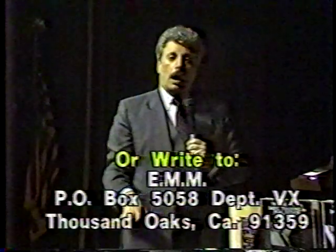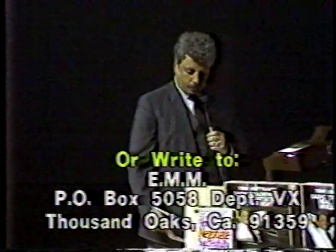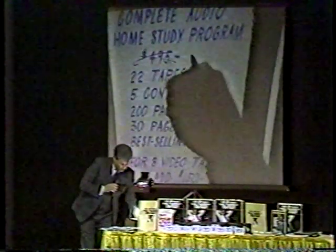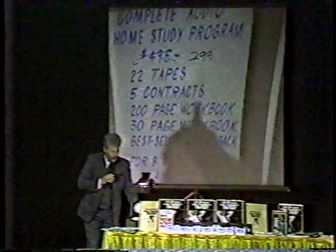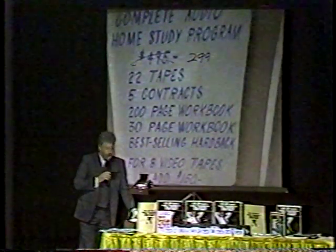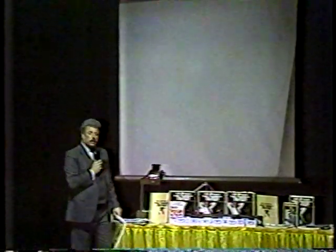If you want it on video, you get eight video cassettes — the whole 16-hour course — for an extra $150. When we talk about inspecting property, I show you the roof, the termites, the pipes, the wires. I take you out into the field. For $299 you get 22 tapes, five contracts, a 200-page workbook, a 30-page workbook, and my hardback bestseller. But for those who don't have the money or aren't sure, I'm offering my Fast Start Program.